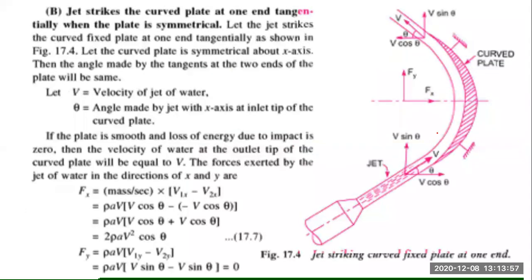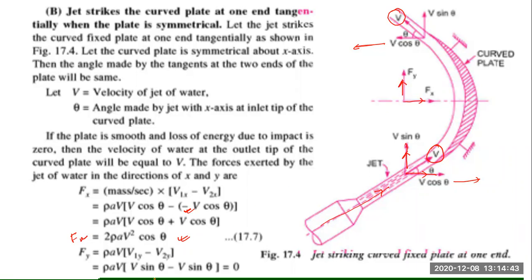The fourth case: the jet strikes the curved plate tangentially and exits tangentially as well, so inlet and outlet velocities remain the same. The horizontal component at inlet and the opposite horizontal component at outlet give Fx equals ρAV²cosθ, and Fy equals zero. So only force in the x-direction exists for this case. Note down this formula. Based on these formulas, today we will solve the numericals.